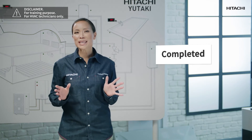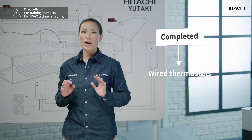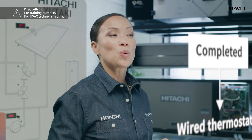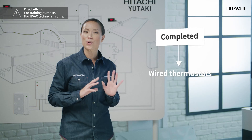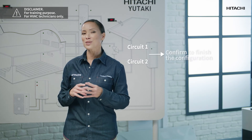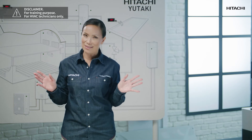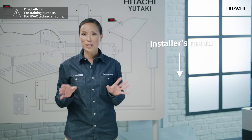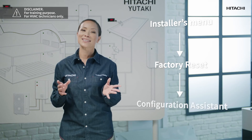Once we can see the completed message in the main control, we can check the wired thermostats if existing. We can select circuit one or circuit two according to our needs and confirm to finish the configuration. In the case we made any mistakes, we can go to the installer's menu and make a factory reset to start fresh with the configuration assistant.